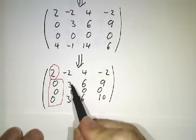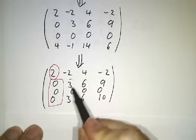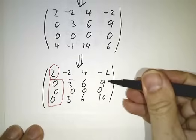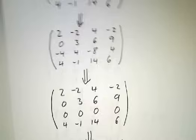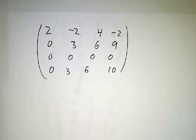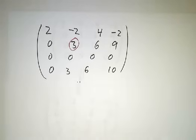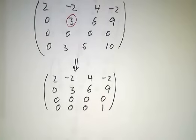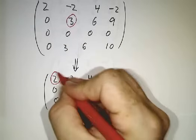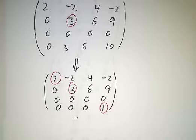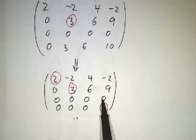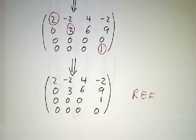Next, we look at the next pivot, which is the three in the second row, and clear out the entries underneath it by subtracting multiples of the second row from rows below it. The entry below is already zero, so we only need to subtract the second row from the third row. Now we have our pivots, and we're almost in row echelon form — except the third row is nothing but zeros and must be at the bottom. So we swap the third row with the fourth row.